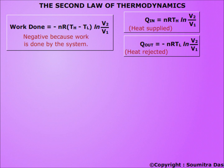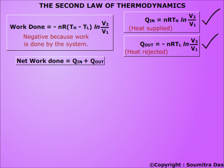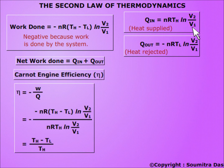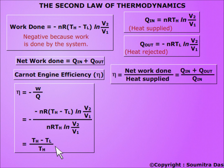The net work done equals Q_in plus Q_out, where Q_in is heat supplied and Q_out is heat rejected (being negative). Heat supplied to the system in step 1 is nRTH · ln(V2/V1). Efficiency η = −W/Q, where W is the work done by the system and Q is the heat supplied; the negative sign makes efficiency positive. Therefore, η = (TH − TL)/TH. It can also be said that efficiency equals heat supplied plus heat rejected, divided by heat supplied.